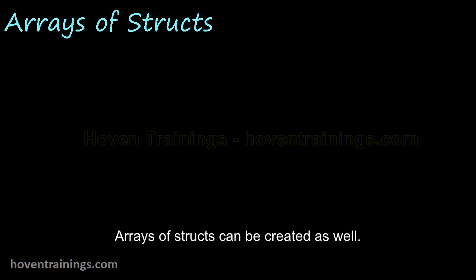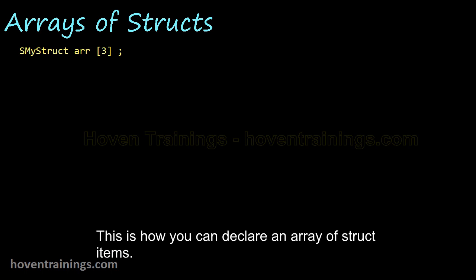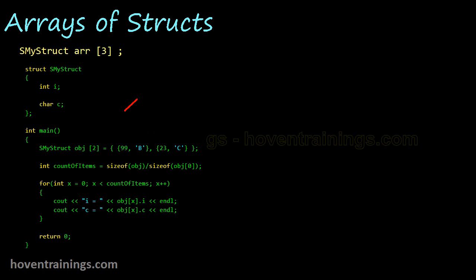The method remains the same, like we created arrays of int. This is how you can declare an array of struct items. This statement will create an array of three int. This is an array of two items. This is the first item. This is the second item of the array.